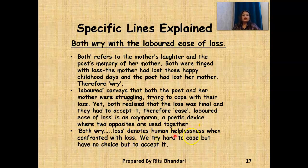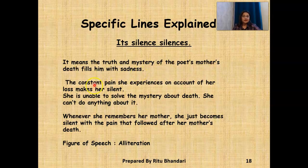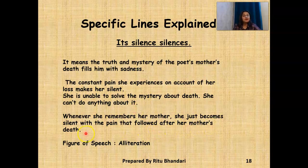Both were wry and it denotes human helplessness when confronted with loss. We try hard to cope but we have no choice but to accept change. Another line, which is the last line of the poem, is 'silence silences.' It means the truth and mystery of the poet's mother's death fills her with sadness. The constant pain she experiences on account of her loss makes her silent. She is unable to solve the mystery about death and can't do anything about it. Whenever she remembers her mother she becomes silent with the pain that followed after her mother's death. The figure of speech is alliteration.